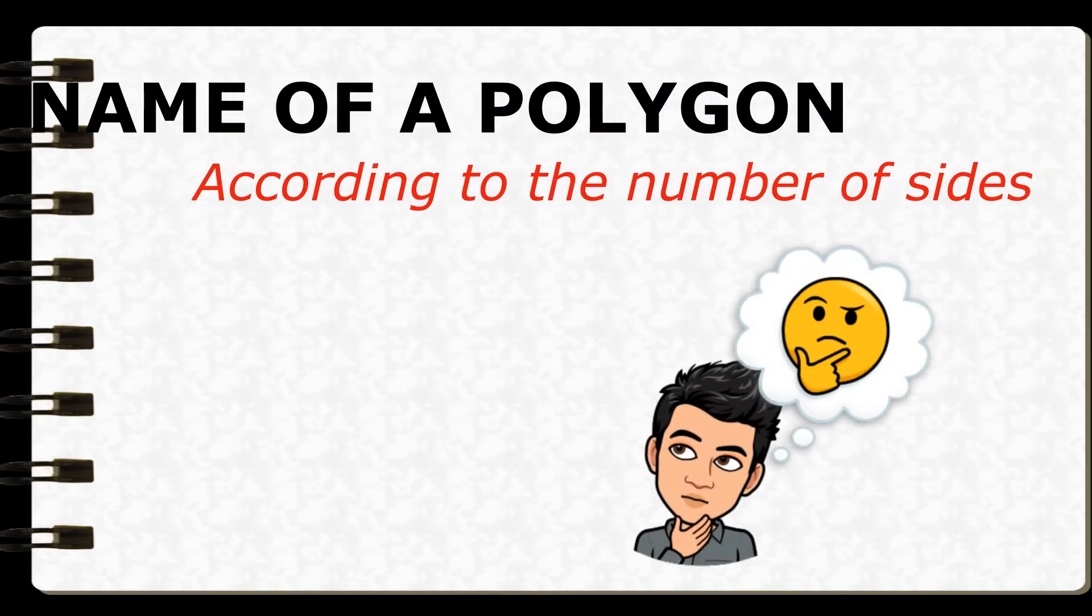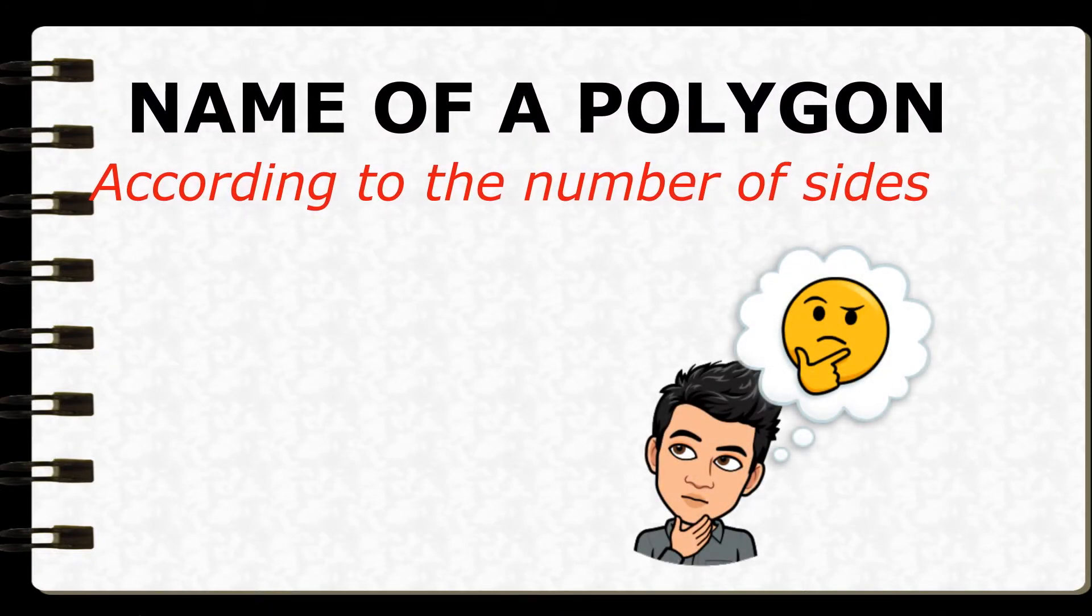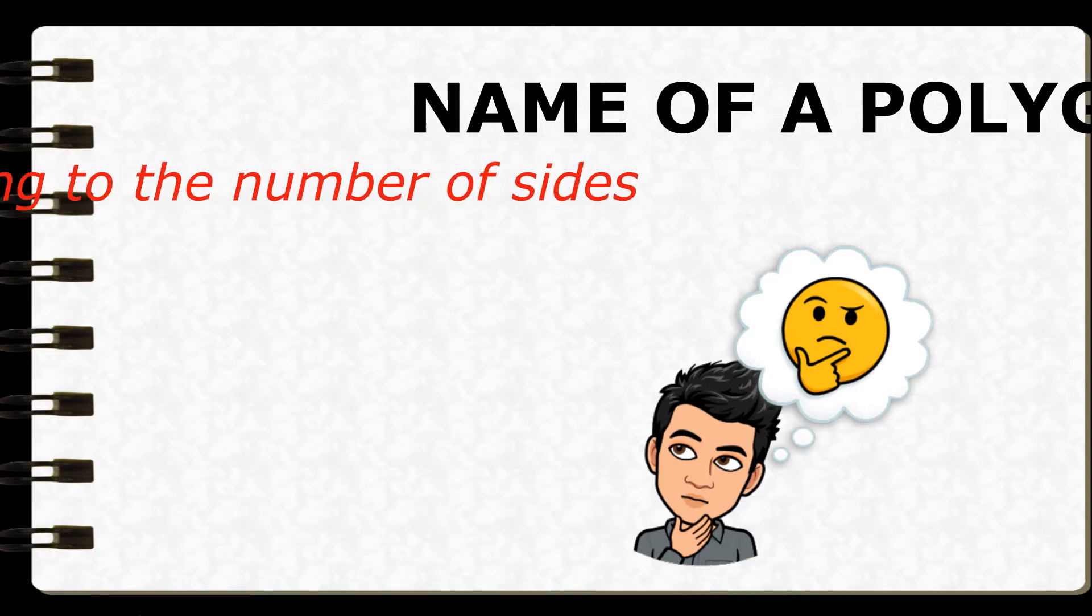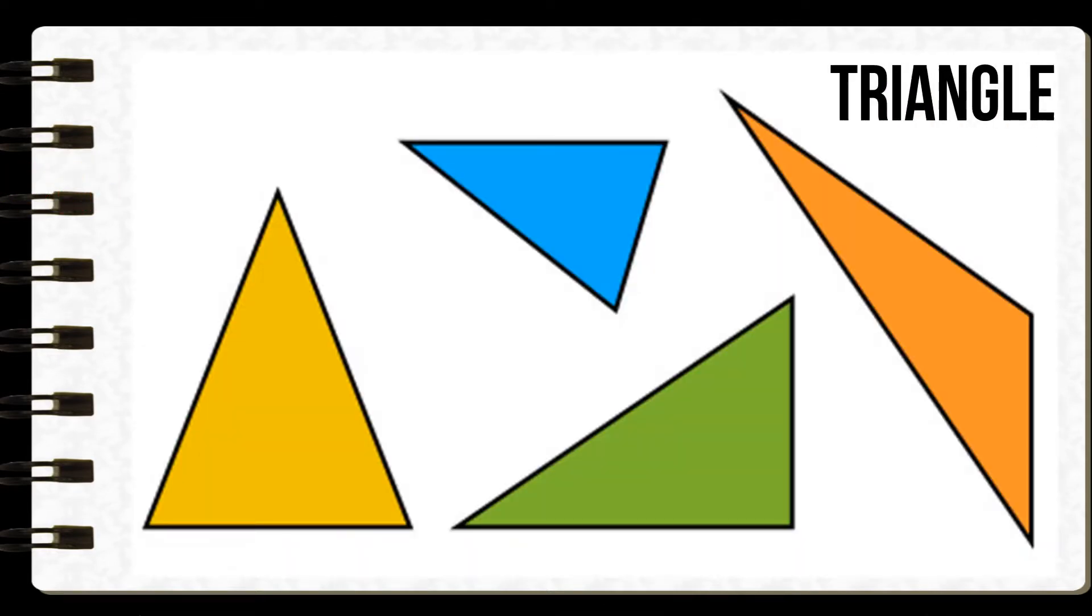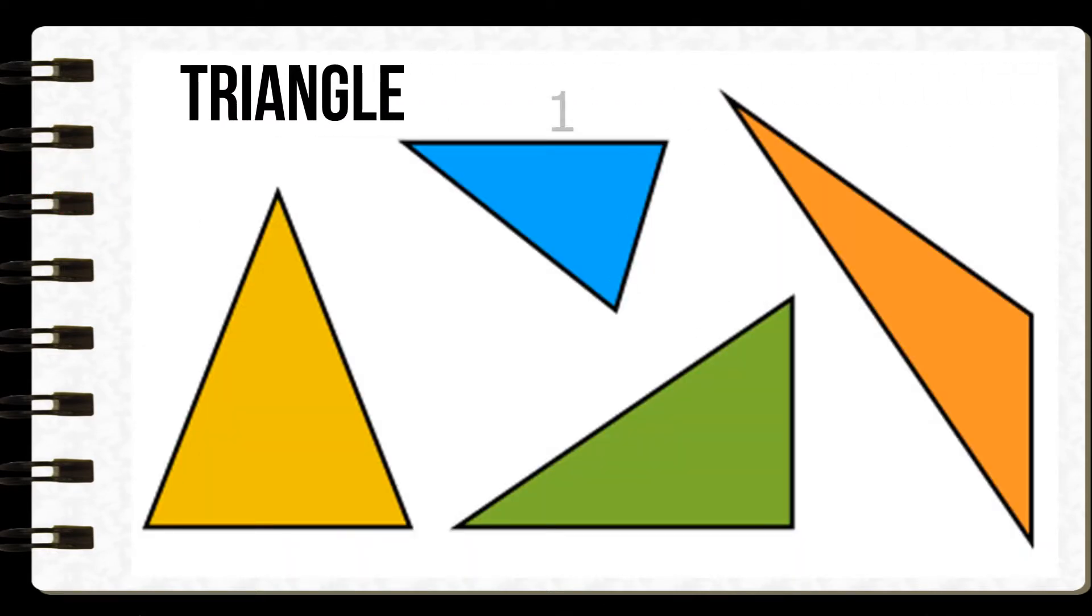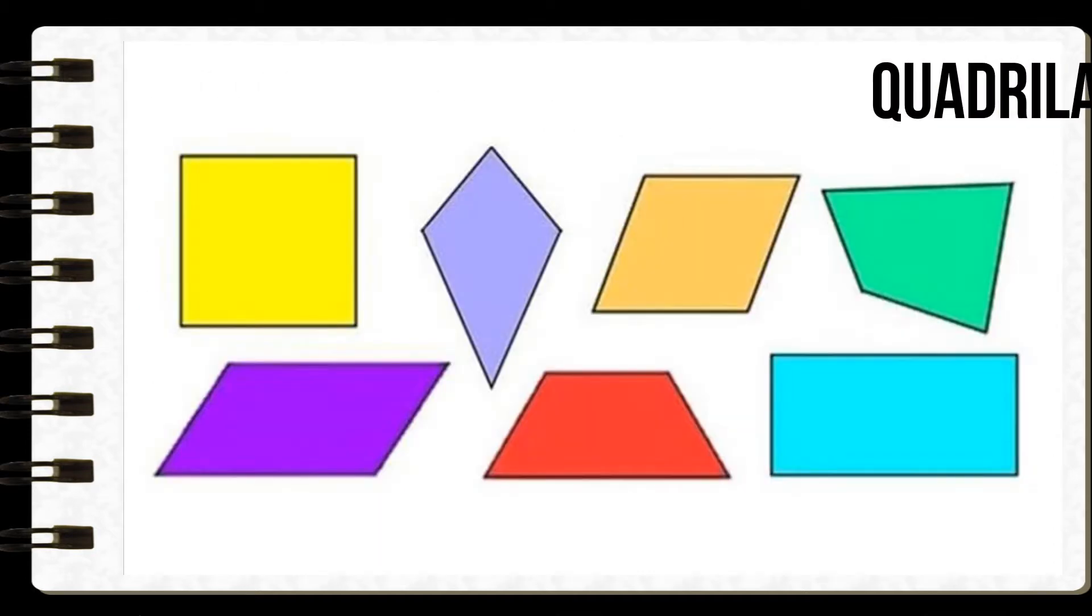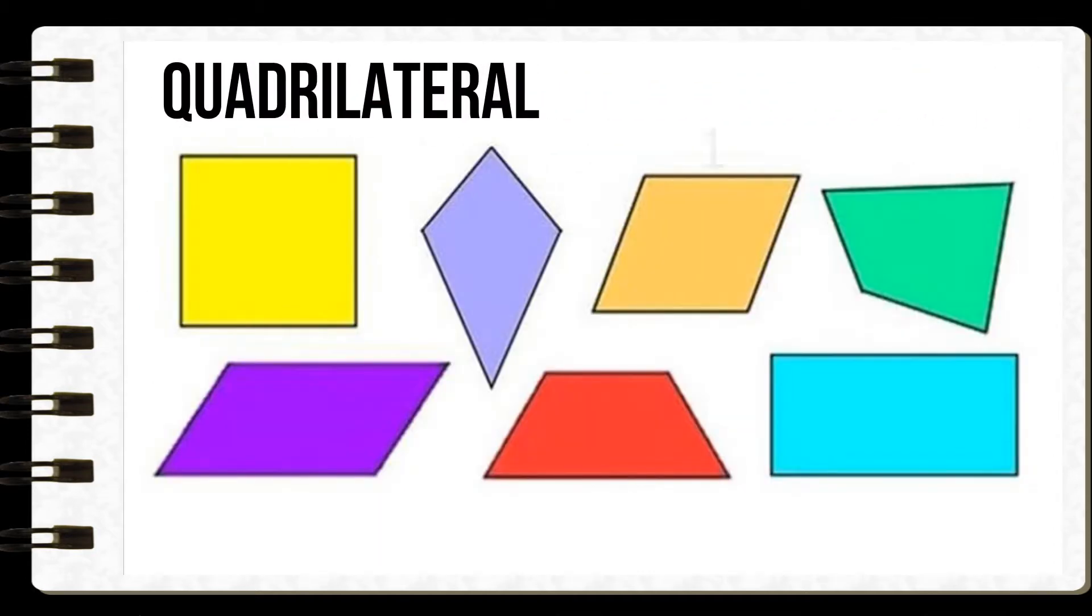Now let's take a look at some of the polygon names according to the number of sides. A triangle, a polygon with three sides. A quadrilateral, a polygon with four sides.